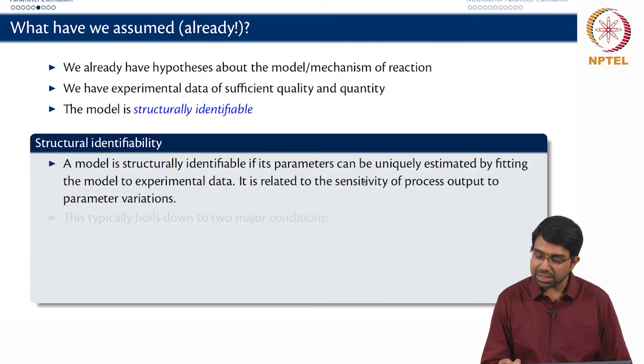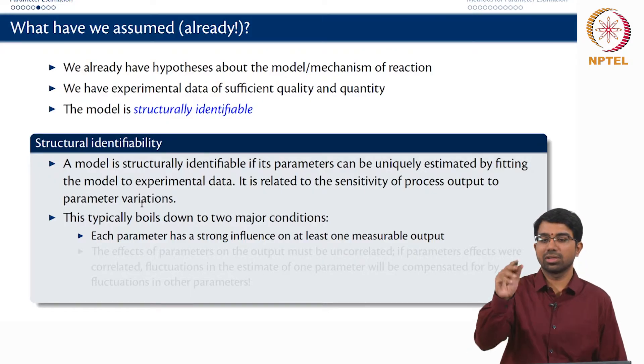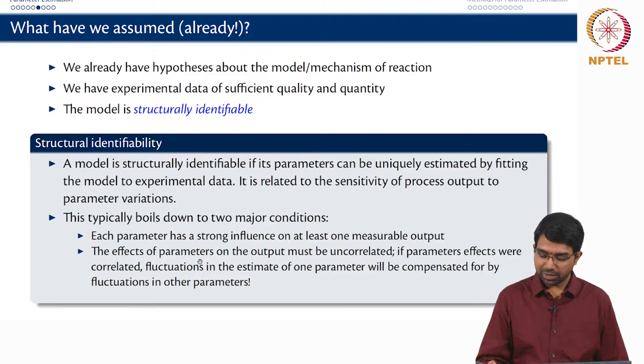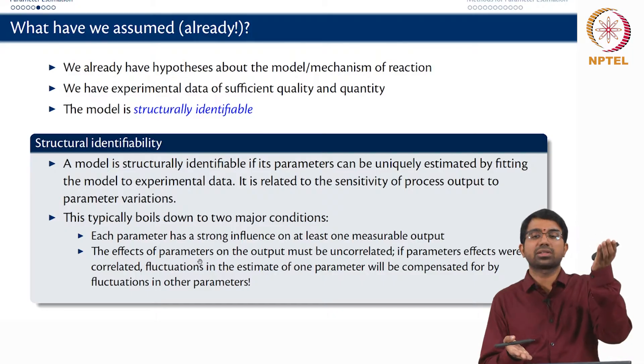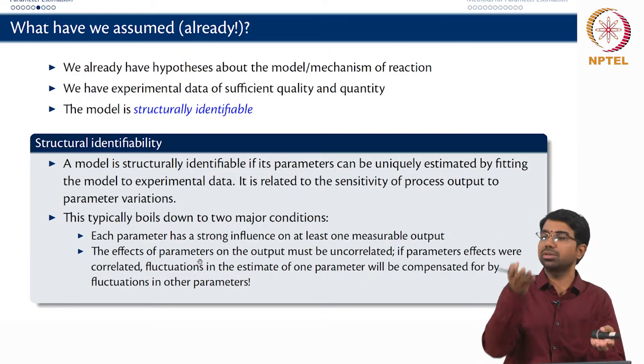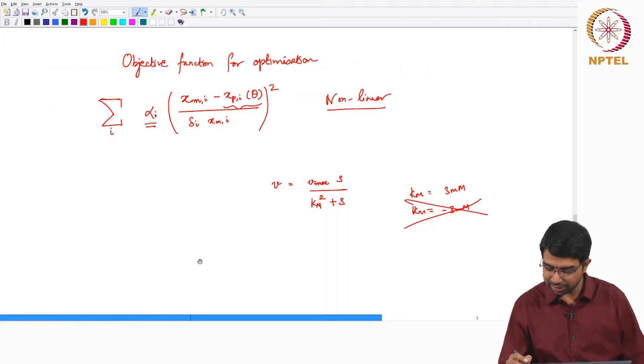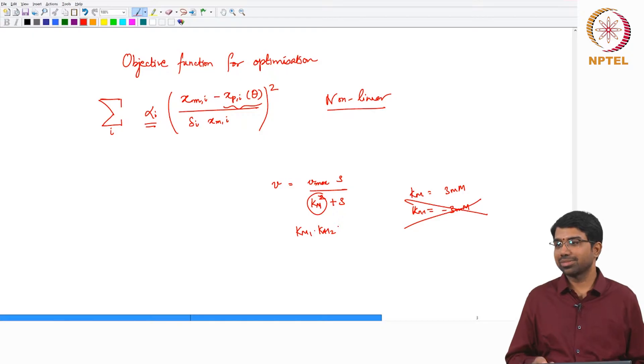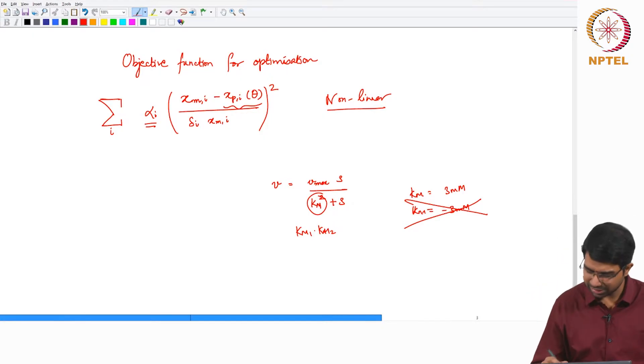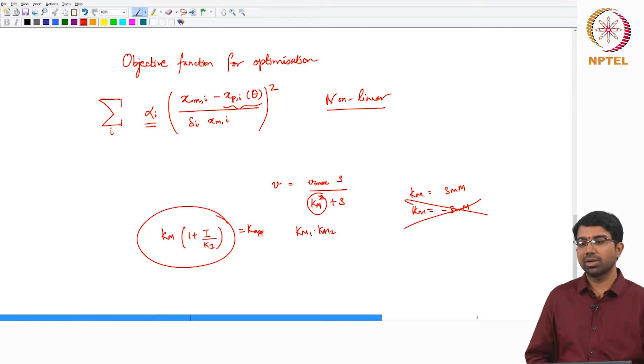So a model is structurally identifiable if its parameters can be uniquely estimated by fitting the model to experimental data. And this is somewhat related to the sensitivity of the outputs to the parameter variations. Typically it means two things. Every parameter at least affects say one concentration. And the effects of parameters should also be uncorrelated. If parameter effects were correlated, you can always have high K1, low K2 will give you the same behavior as low K1, high K2 and you can never distinguish. So it is like saying, another way to look at it is if this was Km1 into Km2. Maybe the product only matters. So those issues will be there. In fact, you will see that very commonly. So there will be Km into (1 plus i by Ki) for reactions involving inhibition. So maybe this is actually called K apparent. This K apparent might be the most important component rather than Km or Ki.